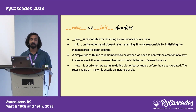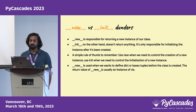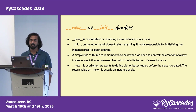__new__ is responsible for creating a new instance and returns a new object, whereas __init__ is used to initialize the object with some values.